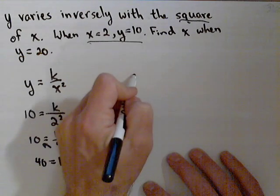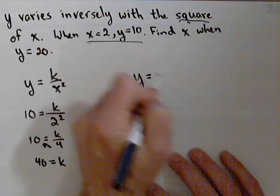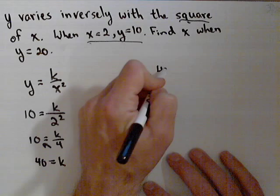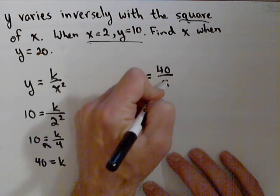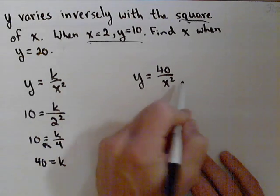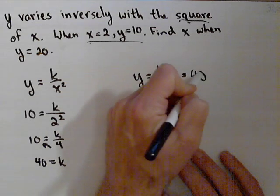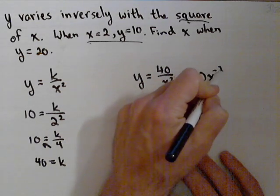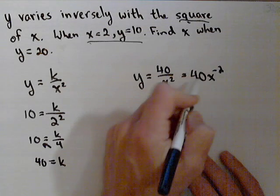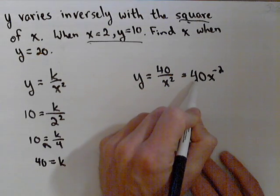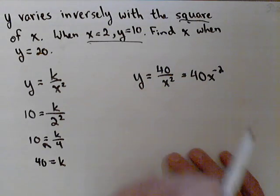And we now have a formula relating the two. So we have a function, which is actually a power function. y equals 40 over x squared. And to see it as a power function, I could, if I wanted to, write it as 40x to the minus 2. We can see we have a power function with a vertical stretch of 40 and an exponent of negative 2.